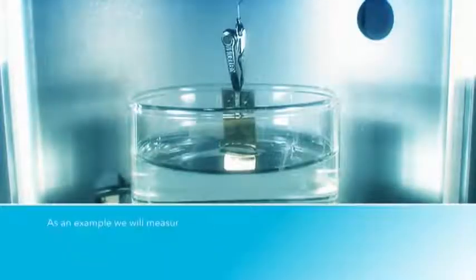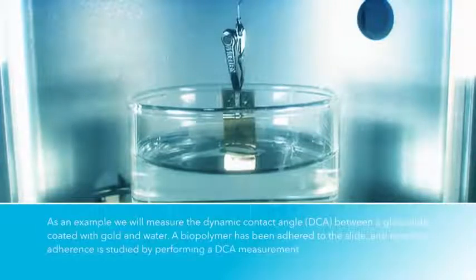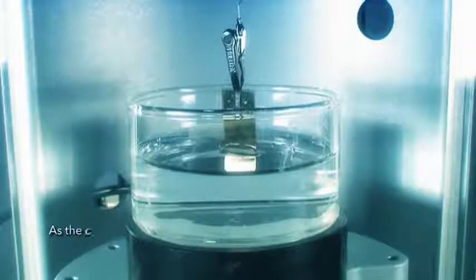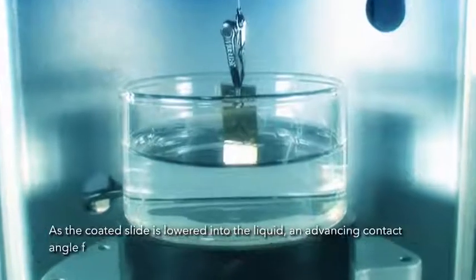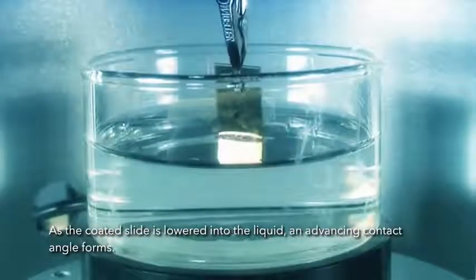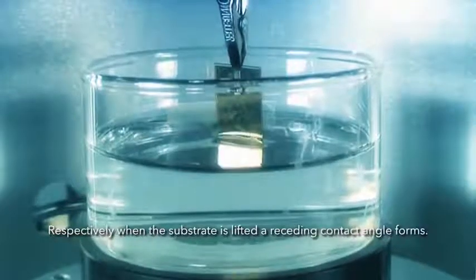As an example, we will measure the dynamic contact angle between a glass slide coated with gold and water. A biopolymer has been attached to the slide, and now the attachment is studied by performing dynamic contact angle measurements. As the coated slide is lowered into the liquid, an advancing contact angle forms. And when the substrate is lifted, a receding contact angle forms.